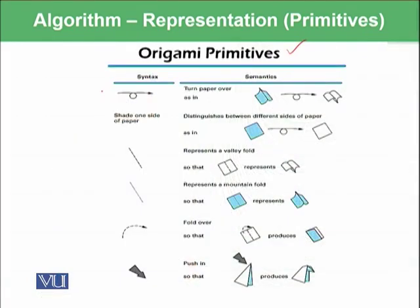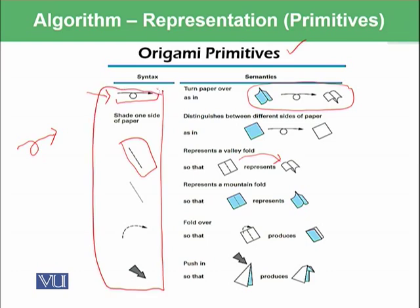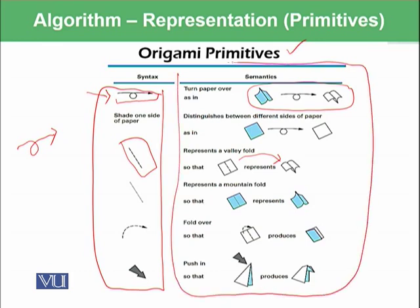A programming language in which we write our code and represent the algorithm is a collection of primitives. It has primitives — each with important meaning — along with a collection of rules stating how the primitives can be combined to represent more complex ideas. Each primitive has its own syntax, its symbol, and its semantics, which is its meaning. For example, in this diagram of origami primitives, the syntax is shown on one side and the semantics on the other — such as 'turn paper over' or 'represent a valley fold.'